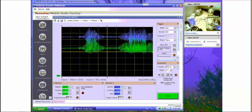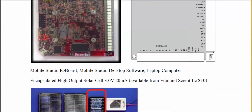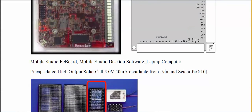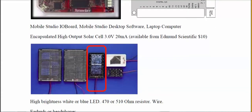Here's the Mobile Studio Red 2 board. We're going to use only the oscilloscope capabilities and the function generator capabilities to make this work. The parts needed are the standard Mobile Studio I/O board, the desktop software, and a laptop computer. Next, you need a solar cell — we're using the solar cell as an optical detector.